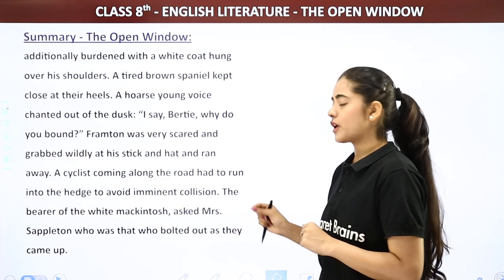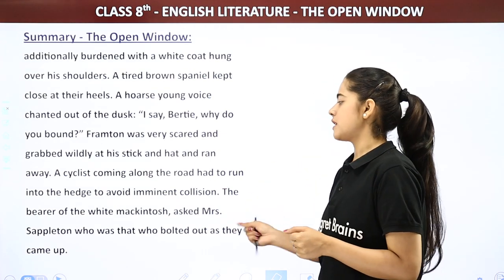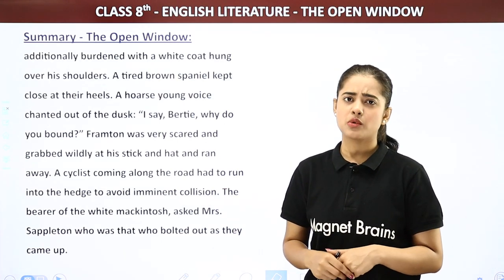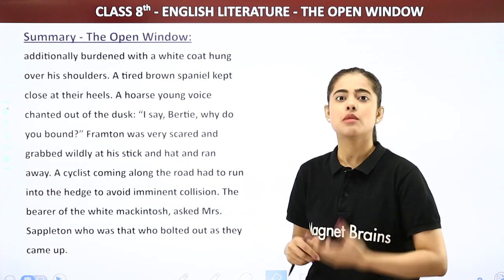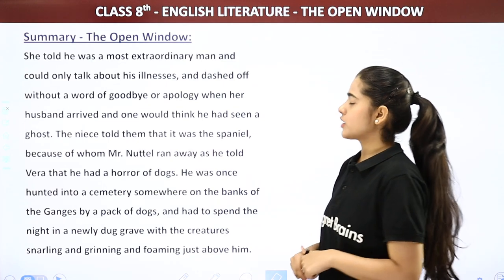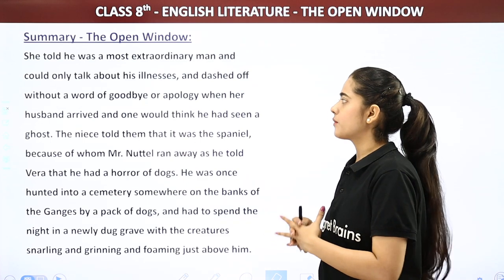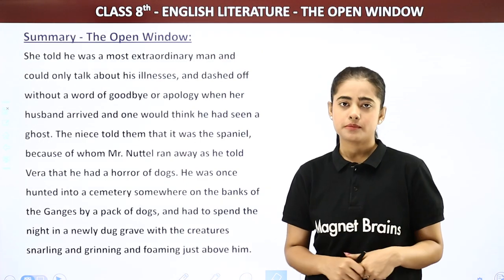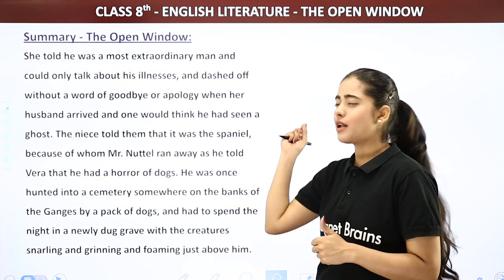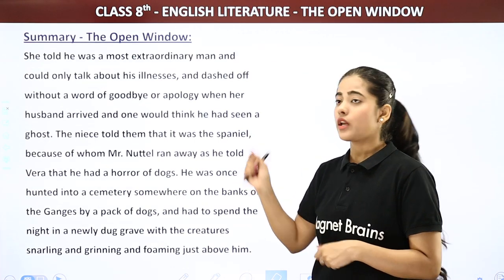The bearer of the white Macintosh — that is Mrs. Sappleton's husband — asked Mrs. Sappleton who was that who bolted out as they came up. Mrs. Sappleton found it strange and told her husband that a very peculiar person had been there — extraordinary man — who only talked about his illness and then dashed off without a word of goodbye or apology when the husband arrived. Mrs. Sappleton said it seemed like he had seen a ghost — and literally for Frampton, they were ghosts, though she didn't know that. It seemed odd to her that Frampton had just run away like that.